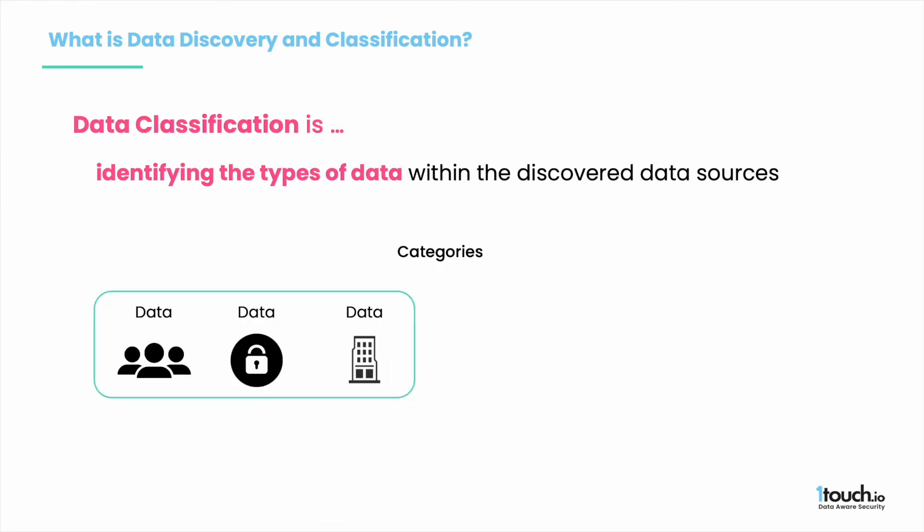Data classification follows the data discovery step. Data classification is the process of identifying the types of data within the discovered data sources and assigning classification labels to that data. It is up to you and your business needs which types or labels to use. For example, data can be classified as public, private, and internal.